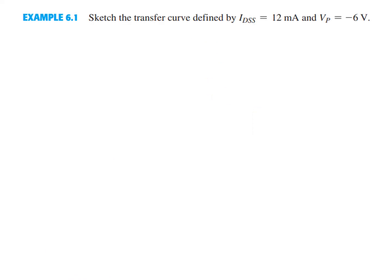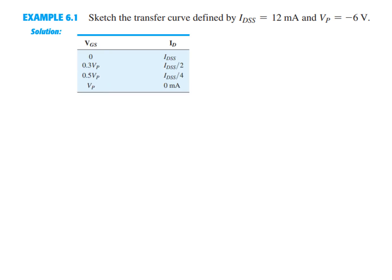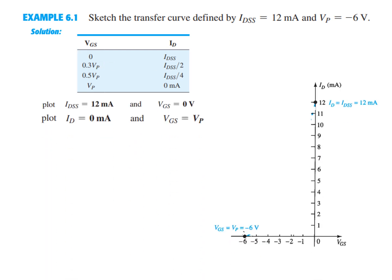Now let's do an example: sketch the transfer curve defined by IDSS = 12 mA and VP = −6 V. We follow the shortcut method. First, when VGS = 0, ID = IDSS = 12 mA, so we mark that point on the ID axis.